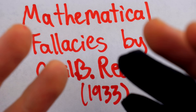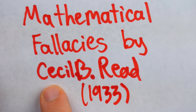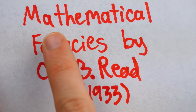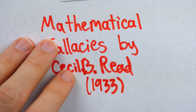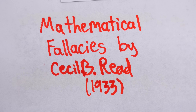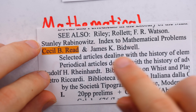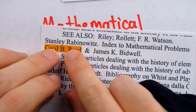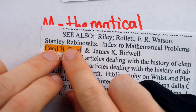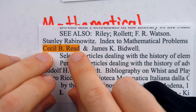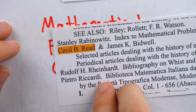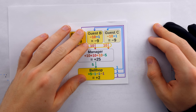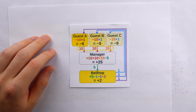But I can find absolutely nothing about this man or this book — nothing whatsoever to suggest either one of them ever existed, except for a few citations mentioning his name on PuzzleMuseum.com. So if anyone knows more about C.B. Reed or his book, please share with the class.